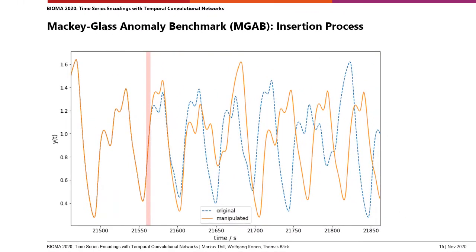Here we have an example of how an anomaly is inserted into a Mackey-Glass time series. The blue dashed curve is the original time series and the orange curve is the manipulated one containing an anomaly. As we can see, it is really not easy to find the position of the anomaly.